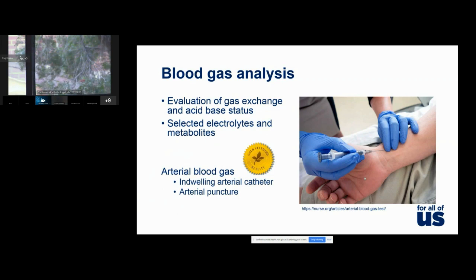Sampling arterial blood may be via an indwelling arterial catheter or arterial puncture. The former is invasive, can be painful, technically difficult, and associated with risks including infection, hemorrhage, thrombosis, and ischemia. Arterial puncture itself is also not risk-free, and for that reason people have been looking at alternatives such as capillary analysis.